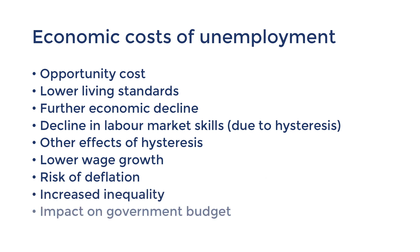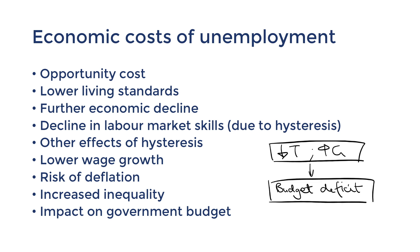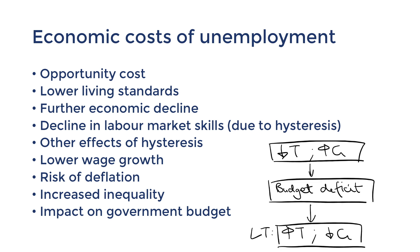The government budget can also be impacted by the unemployment rate. With high unemployment, governments will receive less tax revenue from income taxes, and they'll also increase their expenditure as more unemployed people claim unemployment benefits. With an expansionary fiscal stance, the fiscal budget ends up in deficit. In the long term, the government would need to use contractionary policies to repay this.